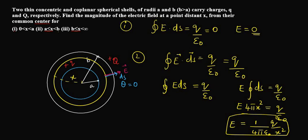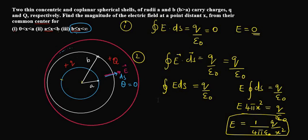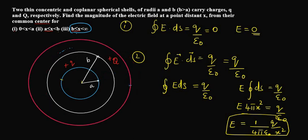Now the third part: we erase the previous Gaussian surface. In the third case, x is greater than b, so x can range from b to infinity. We construct a Gaussian surface outside both shells. The Gaussian surface is drawn such that x is greater than b.